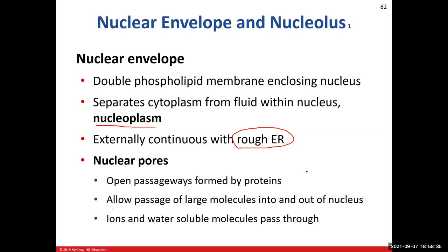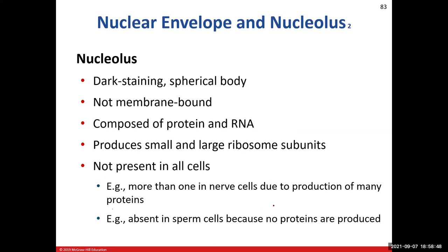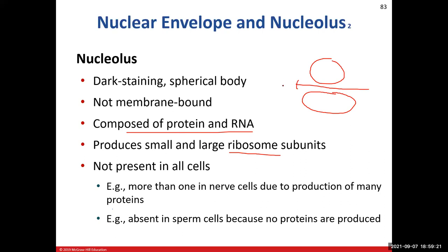Nuclear pores allow proteins such as ribosomes to leave the nucleus and move out into the cytoplasm — either floating as free ribosomes or attaching to the endoplasmic reticulum to become part of the rough ER. Things can also enter the nucleus through these pores. Inside the nucleus is another structure called the nucleolus — a ball within a ball — which contains proteins and RNA. This is where the large and small subunits of ribosomes are made.